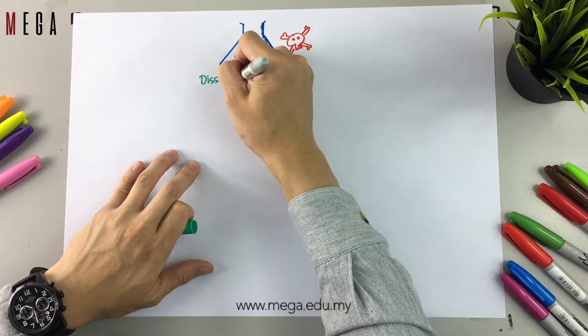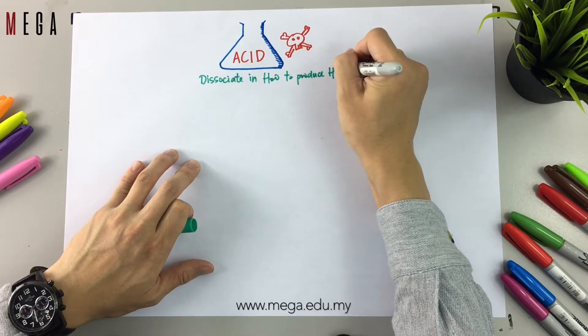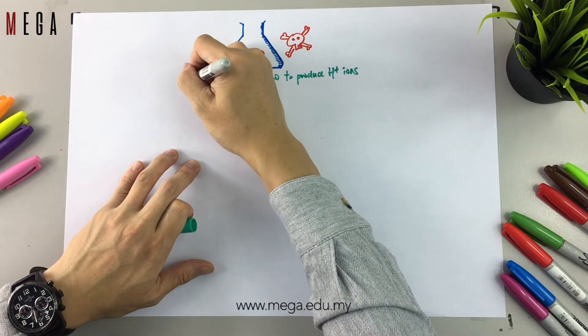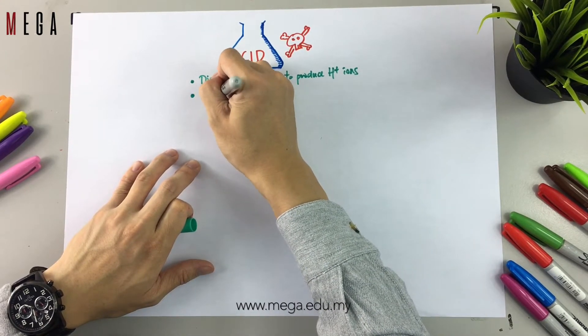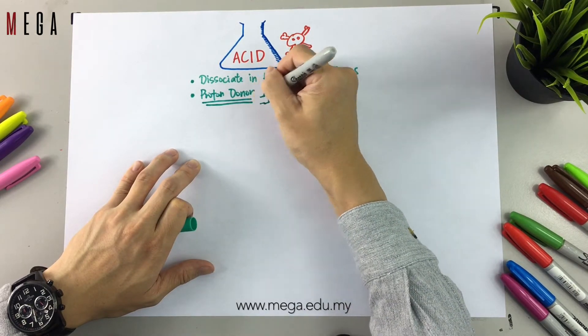Acid is a chemical substance that dissociates in water to produce hydrogen ions. Acid is also defined as a proton donor. This is the definition of acid.